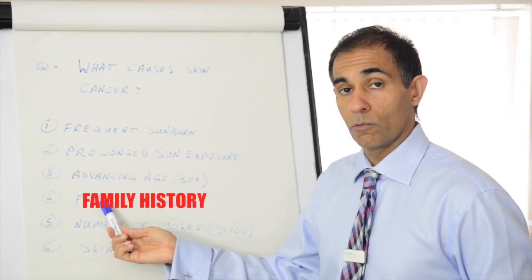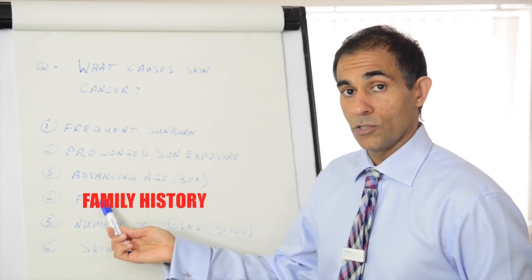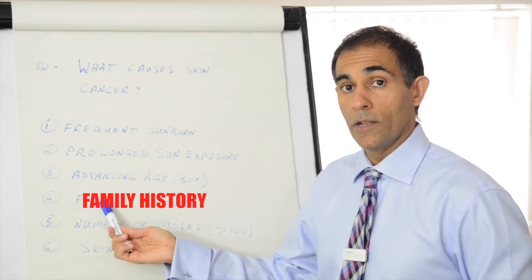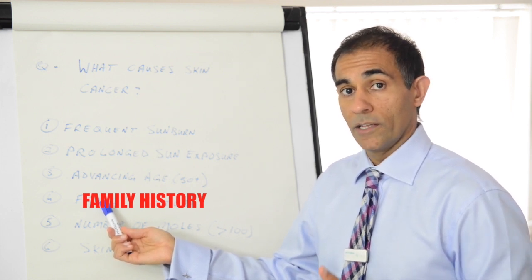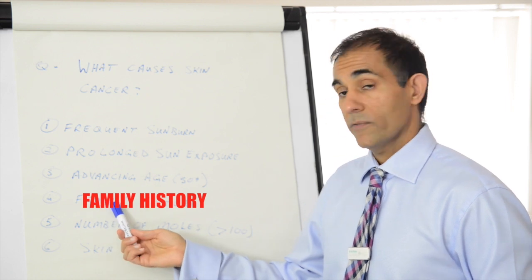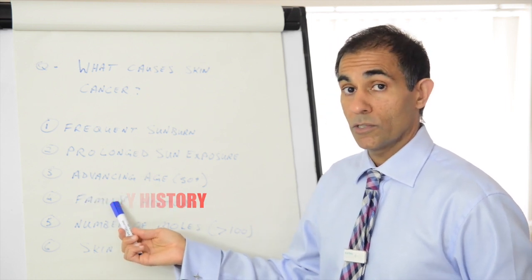The fourth is a very strong risk factor and this is to do with family history. This refers to anyone in your direct family so that is parents or siblings. This factor alone does increase your risk almost tenfold.